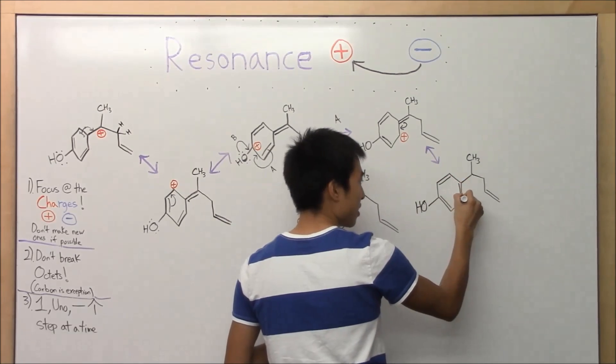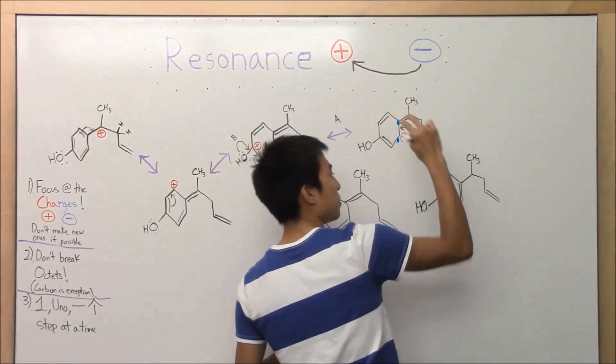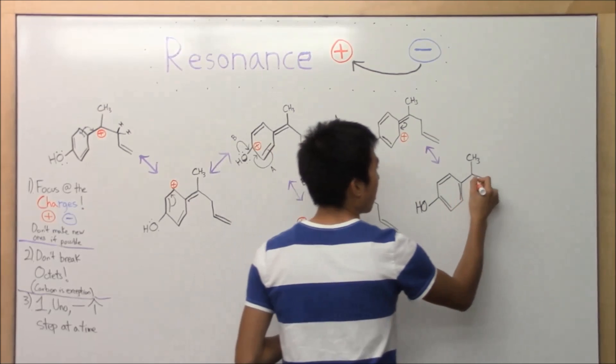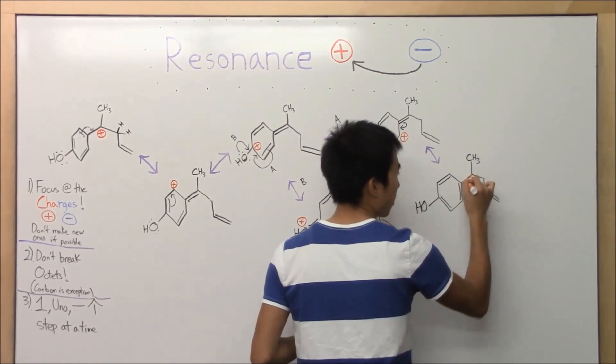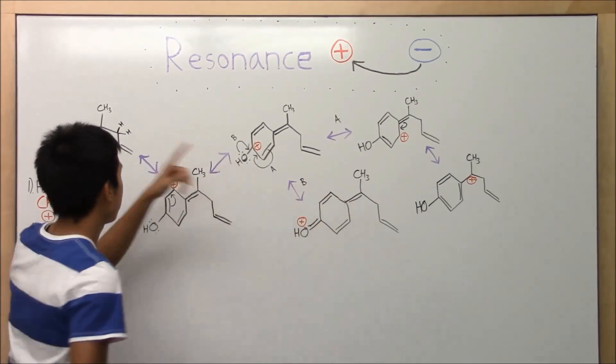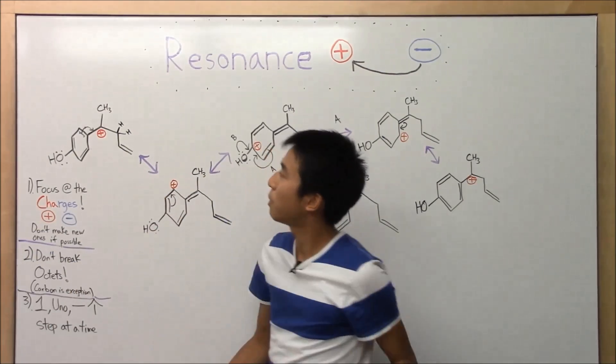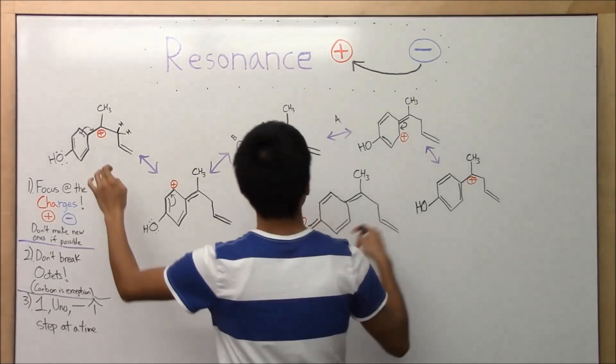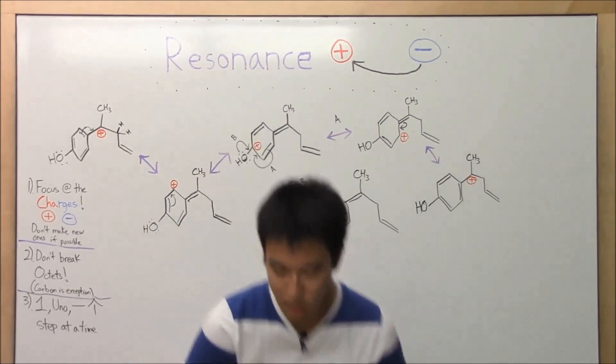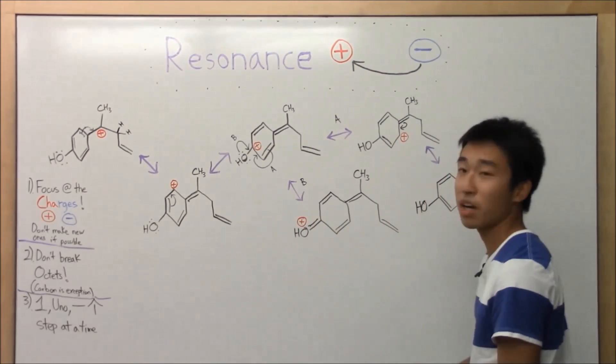Because those two electrons went boop, boop. They did not take a poop, but yep. Positive charge is back now at that original spot. So, that looks very, very similar to our original starting resonance structure, right? But it's not the same structure because the pi bonds have moved. So, yep. These are the five structures. One, two, three, four, five.